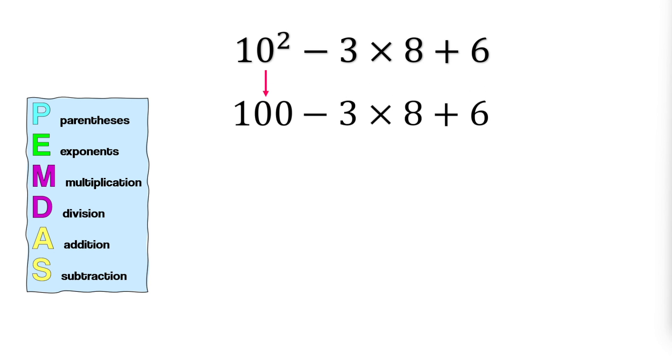Next, we perform any multiplication or division from left to right. In this expression, we have 3 times 8, which equals 24. Bring everything else down.